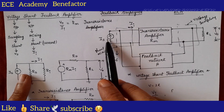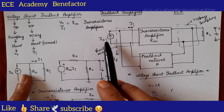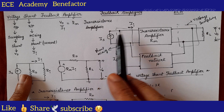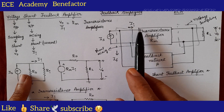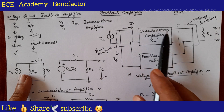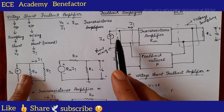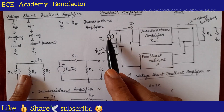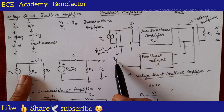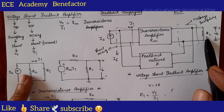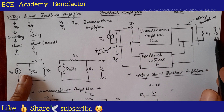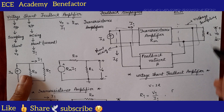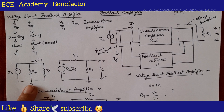If shunt mixing is done, what source do we place? Current source I-s. This current source is placed, and the current I-i goes into the trans-resistance amplifier along with a feedback current I-f. At the input side we can see three currents: I-s, I-i, and I-f. At the output side we have the load resistor R-L and output voltage V-naught.